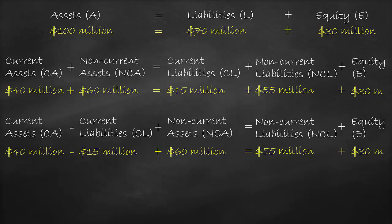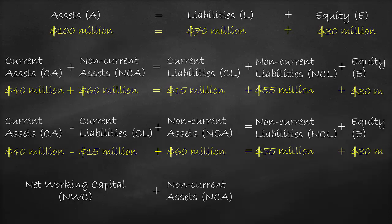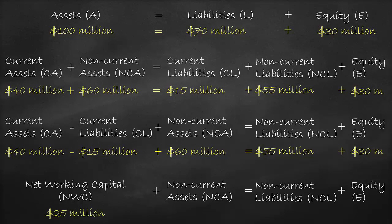We know that current assets minus current liabilities is called net working capital. Therefore, we can rewrite this formula as: net working capital plus non-current assets equals non-current liabilities plus equity. Using another numerical example, we have $40 million of current assets minus $15 million of current liabilities, which gives us net working capital of $25 million, plus $60 million of non-current assets, which equals $55 million of non-current liabilities plus $30 million of equity.